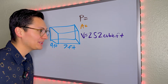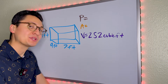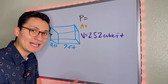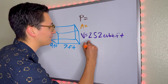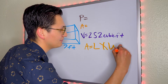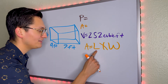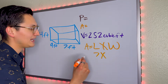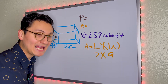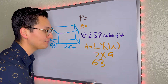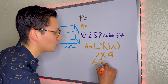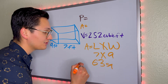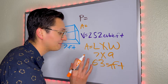Now let's find the area. If you don't know how to do area or perimeter, go back and watch my other videos. The formula for area is length times width. The length is 7 and the width is 9. 7 times 9 is 63 square feet.